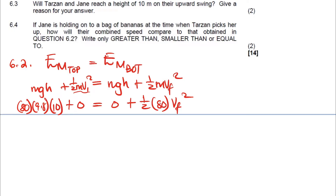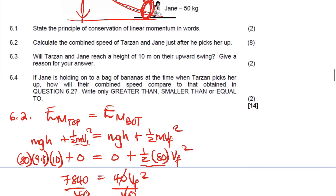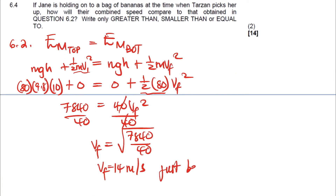Calculating: 80 × 9.8 × 10 = 7840 J. This equals ½ × 80 × v_f², which gives 40 × v_f². Dividing both sides by 40: v_f = √(7840 ÷ 40) = 14 meters per second. This is Tarzan's velocity just before the collision — just before he picks up Jane.